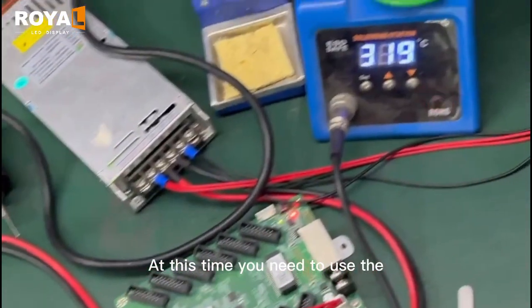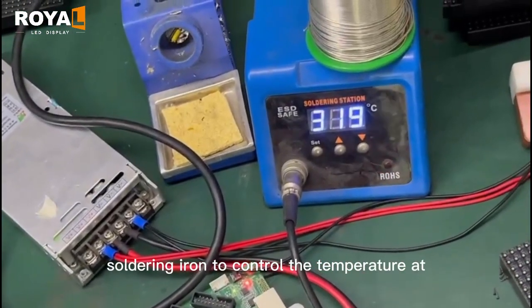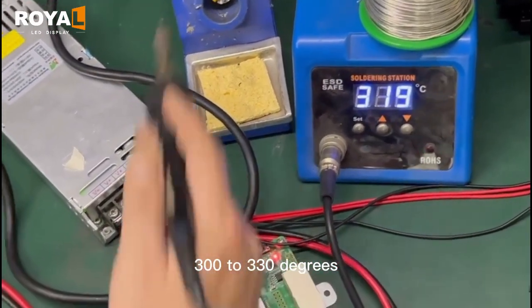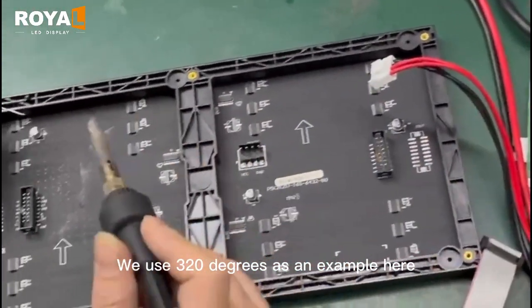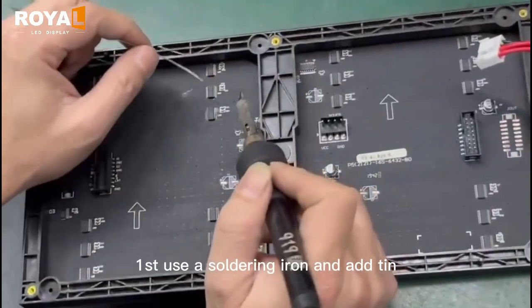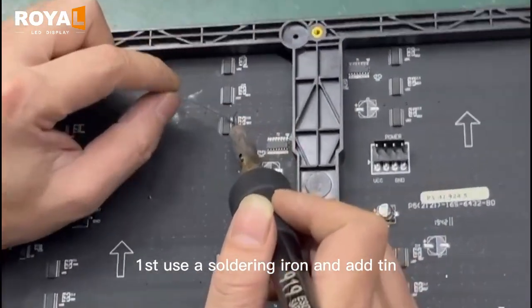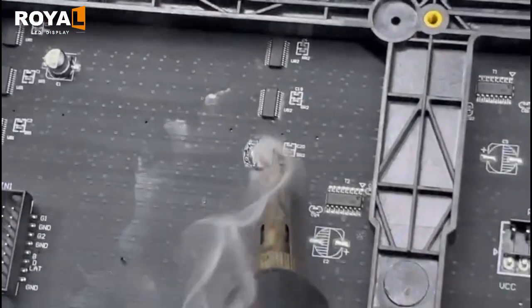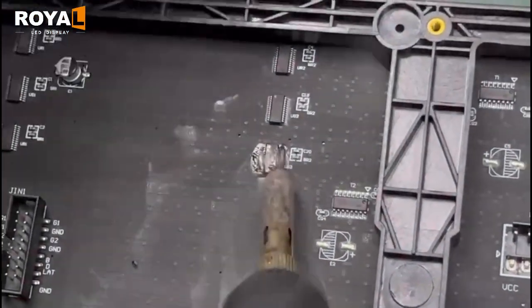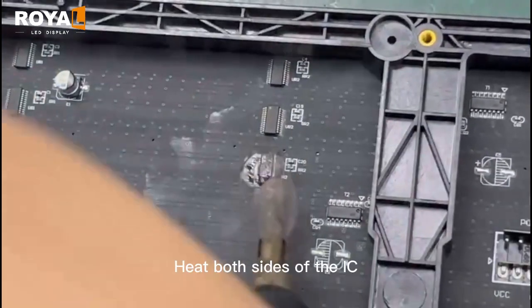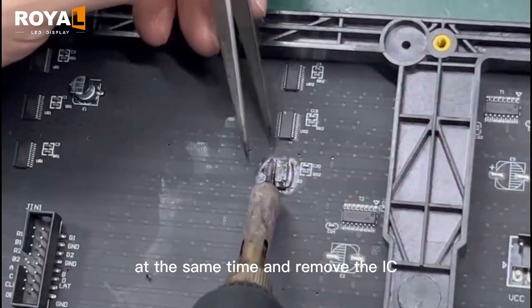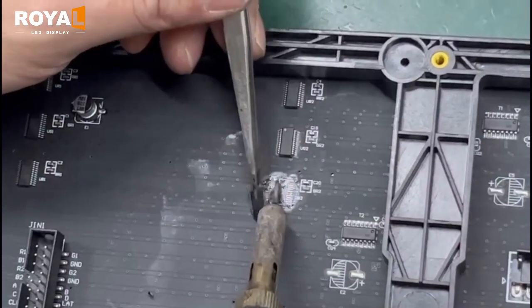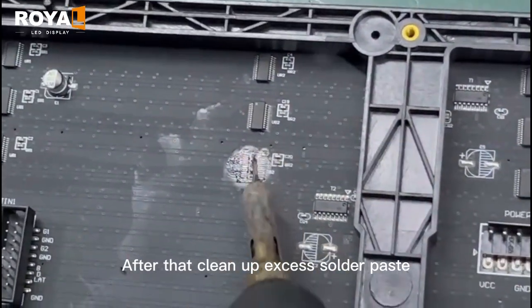At this time, you need to use a soldering iron to control the temperature at 300 to 330 degrees. We use 320 degrees as an example here. First, use a soldering iron and add tin on both sides of the IC and melt it. Heat both sides of the IC at the same time and remove the IC. After that, clean up excess solder paste.